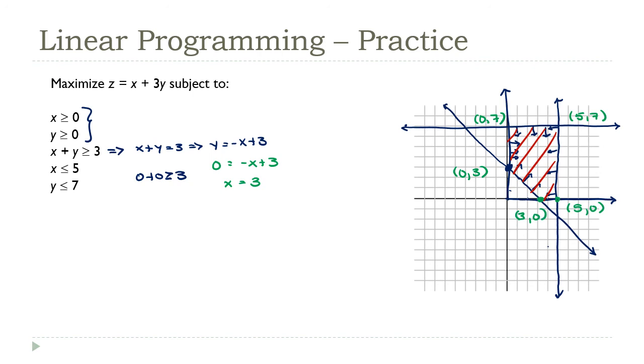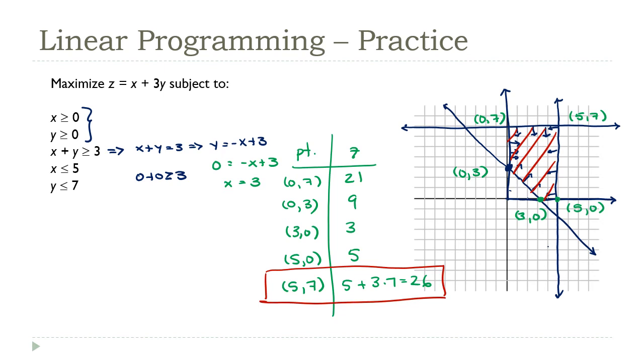So now, once again, I'm going to make a table. And I'm going to have my points. I'm going to have my z values. My points are zero comma seven, zero comma three, three comma zero, five comma zero, and five comma seven. So what are we going to get here? Zero plus three times seven is 21. Zero plus three times three is nine. These will be just three and five. And the last one here is five plus three times seven, which is 26. And that's our winner. That is where this function is maximized.